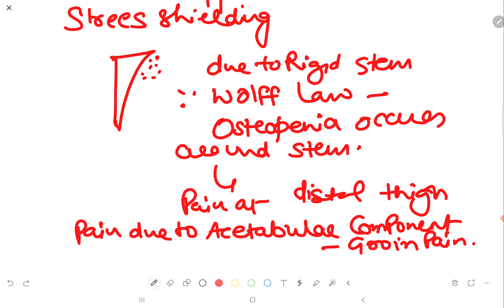So now what is the stress shielding? Stress shielding occurs due to the rigid stem. Because now stem is bearing weight. As we know, according to Wolff's law, osteopenia occurs around the stem. Pain will be at distal thigh. Pain due to acetabular component occurs at the groin area.